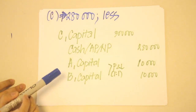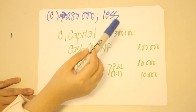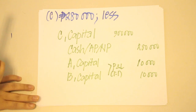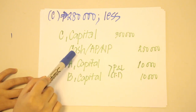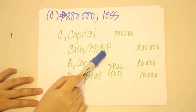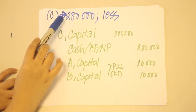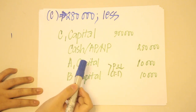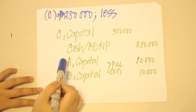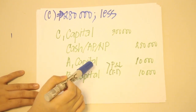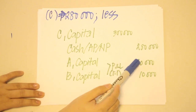The last scenario is when the partnership pays 280,000 — less than C's capital balance of 300,000. We debit C capital for 300,000 and credit cash, accounts payable, notes payable, or whatever form of payment for 280,000. The remainder of 20,000 is divided between A and B using their P&L ratio, and this time we credit A and B capital since it is an increase in their capital balances — 10,000 each.